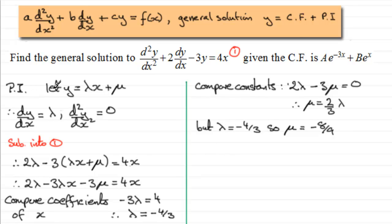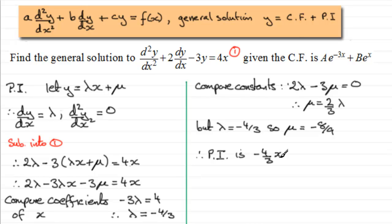Now that I have lambda and mu, I can write down the particular integral. The particular integral — PI for short — is minus four-thirds x plus mu, which is minus eight-ninths.